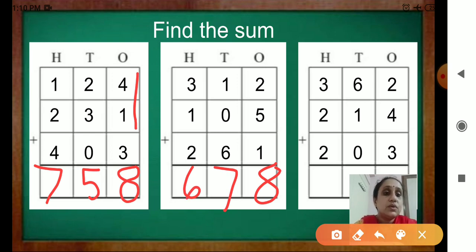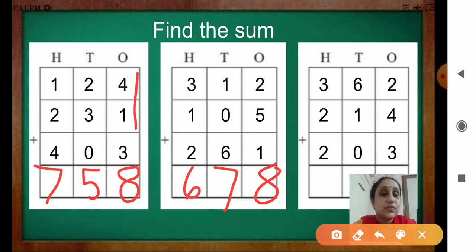Now this one, the 3rd one. Starting from the 1s place: 2 plus 4 is 6. And 6 plus 3 is 9.